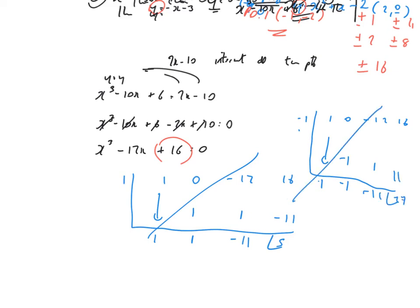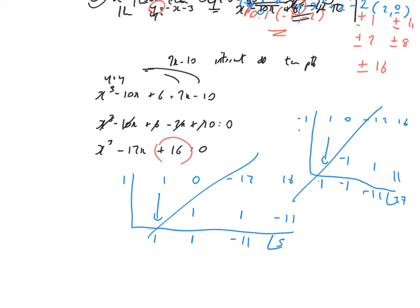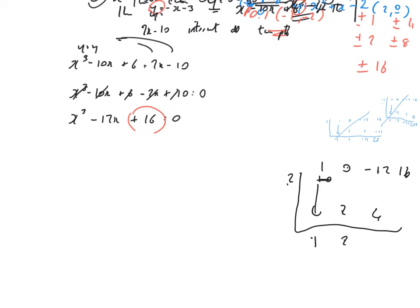Let's try x equals 2: drop 1 down; 1 times 2 is 2; 2 plus 0 is 2; 2 times 2 is 4; 4 minus 12 is minus 8; minus 8 times 2 is minus 16. That worked — remainder is 0.